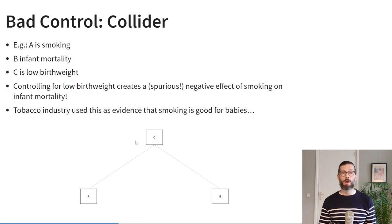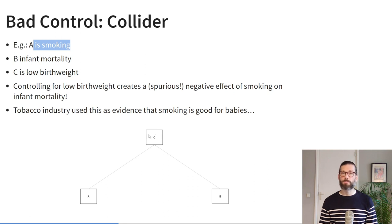Finally, we get to bad controls. The quintessential example is the collider variable — a variable caused both by the intervention A and the outcome B. If you control for C when it's caused by both A and B, you will create a biased relationship between A and B. For example, if A is smoking, B is infant mortality, and C is infant low birth weight — controlling for low birth weight will make smoking appear to have a negative relationship with infant mortality. For decades the tobacco industry used this as an argument to claim that smoking protected against infant mortality, when of course nothing could be further from the truth.